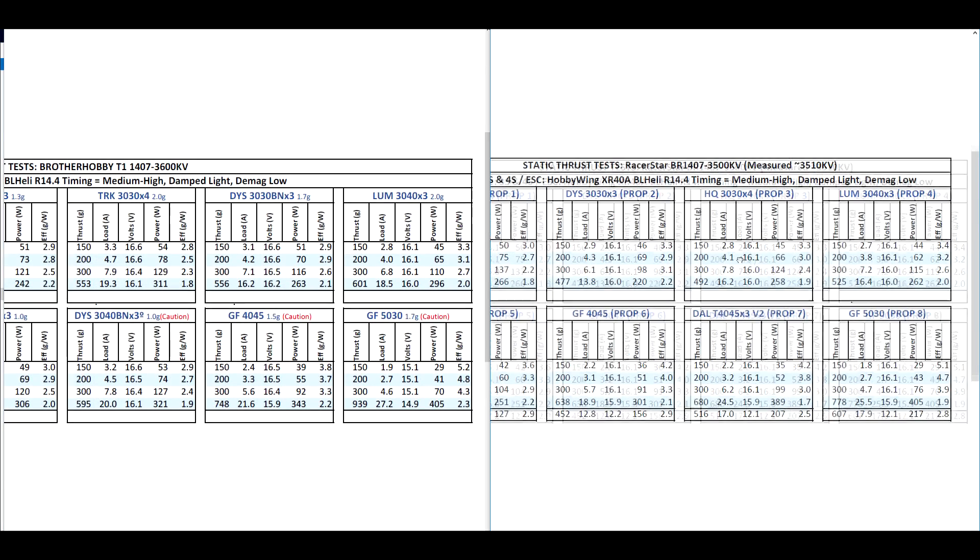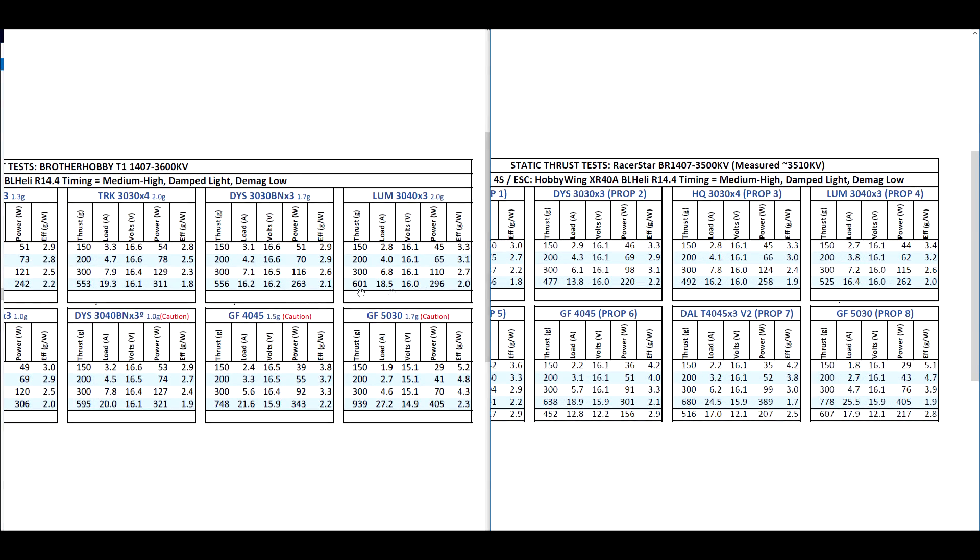So looking at the Lumineer, here we see about 75 grams difference. Brother Hobby is 600 grams at 18 amps. And this one's 525 at 16.4 amps, so about 2 amps difference. But of course, that seems pretty normal amp draw here for the Racer Star. So it's not pulling excessive amps.